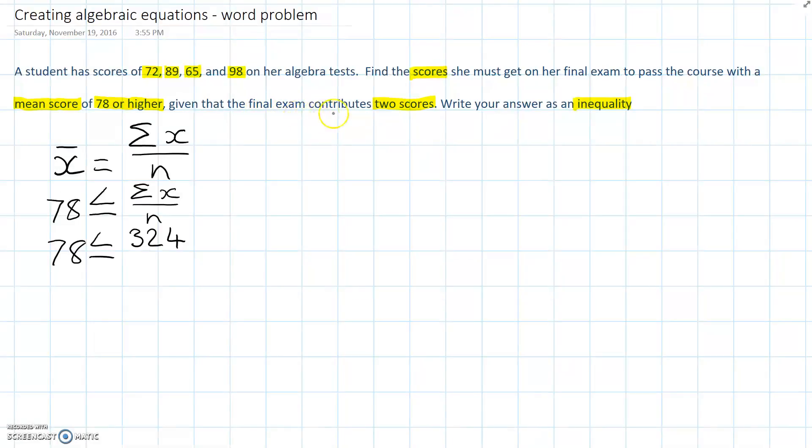But the final exam contributes another two scores. We don't know what this student got on the final exam. So, we're going to call this value unknown, x for unknown. But the final exam contributes two scores. So, she's going to get two unknown scores. In this case, we have to add in these two values to the full set of results, so we're going to add these two unknown values.